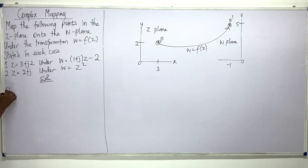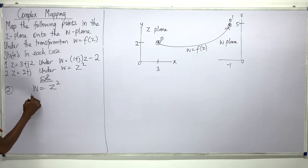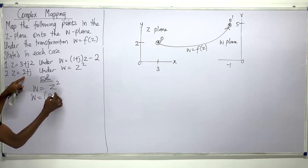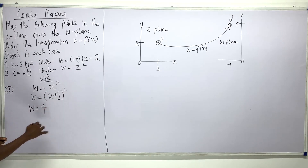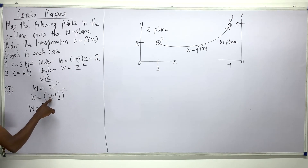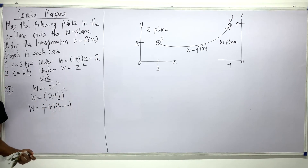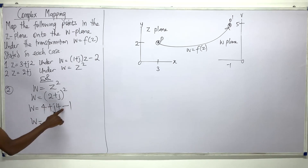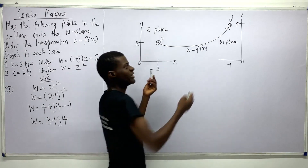For question 2, w = z² with z = 2 + j, so w = (2 + j)². Expanding: 2² = 4, 2 × j = j2, times 2 gives j4, and j² = −1. So w = 4 − 1 + j4 = 3 + j4.